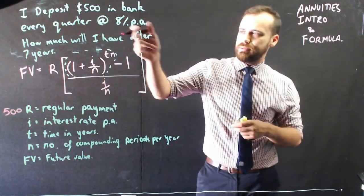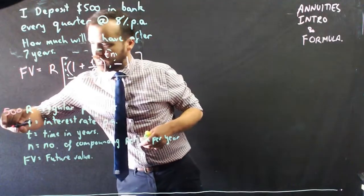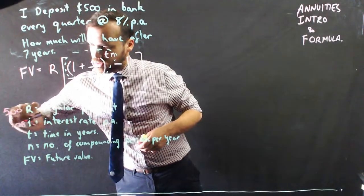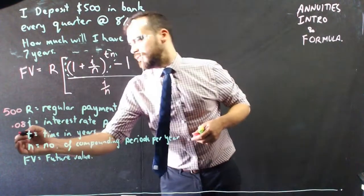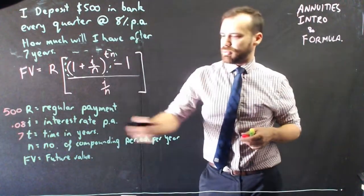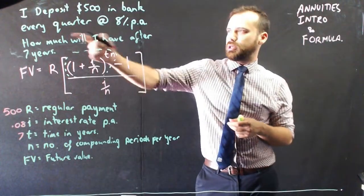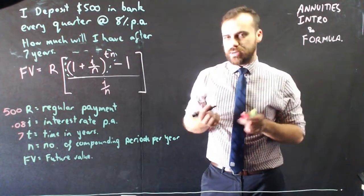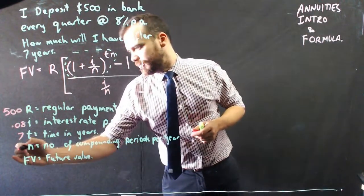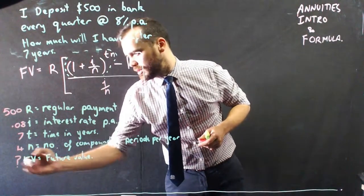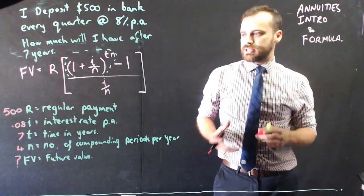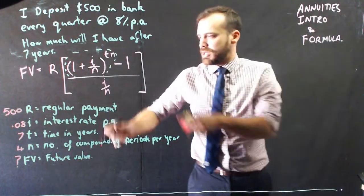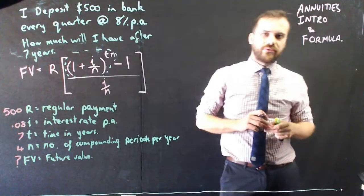The interest rate is 8% per annum, and we need to write it as a decimal, so 0.08. The time in years, it's going to be 7 years. The number of compounding periods, well, I'm putting it in every quarter, so that means 4 times a year. And the future value is the thing I don't know. So now I simply need to take those numbers and shove it in that formula.